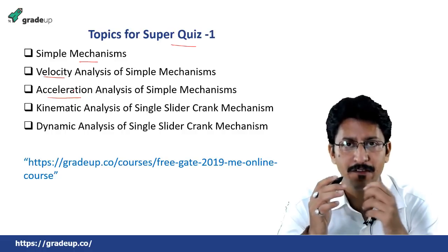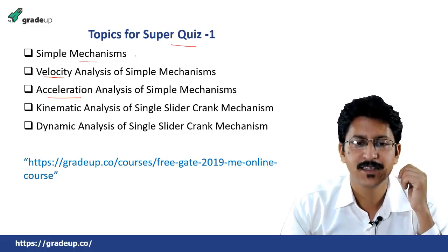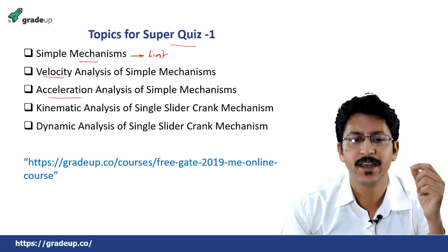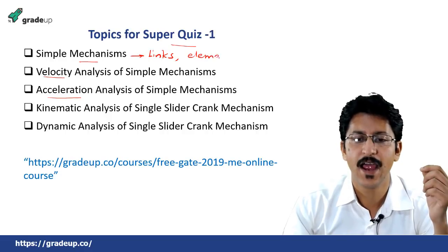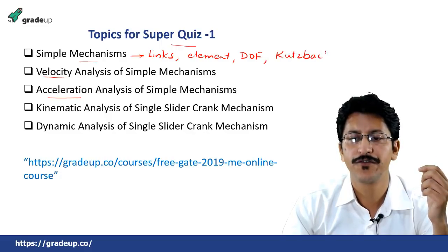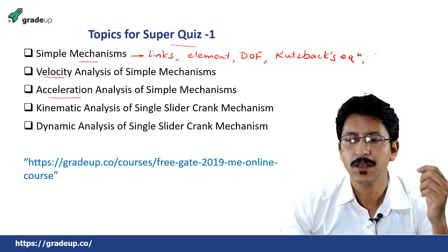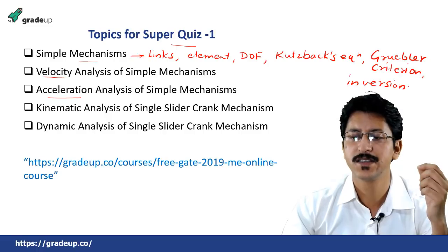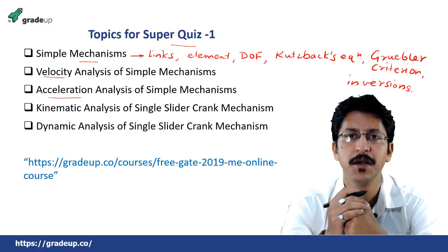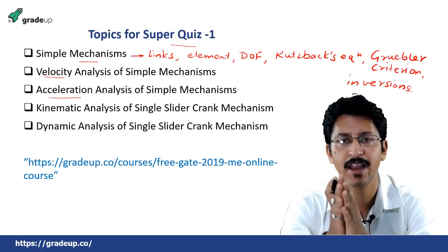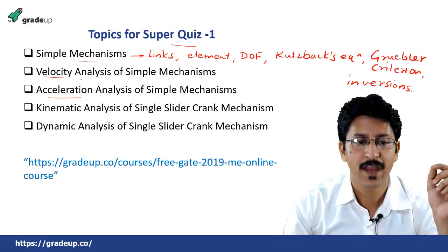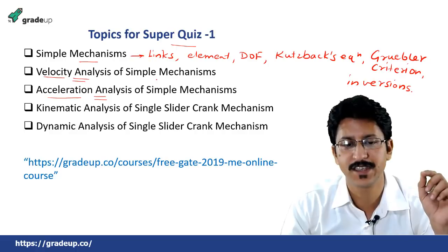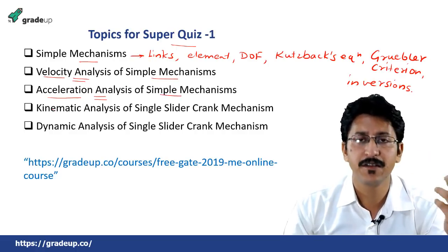Let me give you a brief introduction of the topics. In Simple Mechanisms, we will cover all concepts relating to links, elements, and degree of freedom — the Kurzbach equation for finding the degree of freedom, the Grubbler criterion, and also the inversions: what is an inversion and the different kinds of inversions of simple mechanisms — that is four-bar mechanism, single slider, double slider, and all that. Then we will cover velocity analysis and acceleration analysis of simple mechanisms.